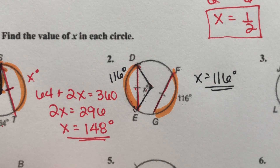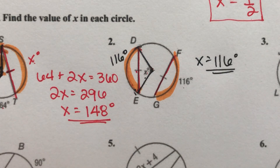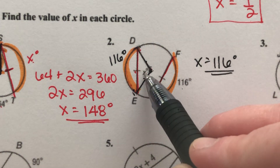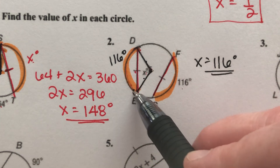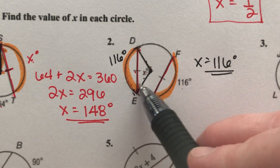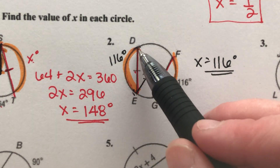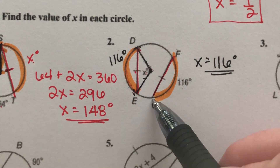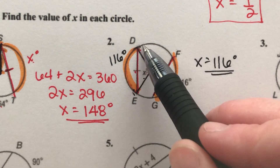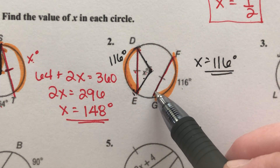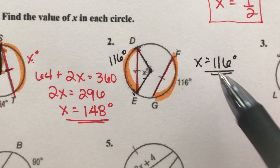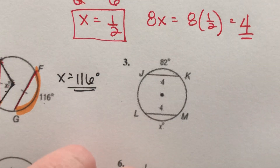Here's the central angle — this creates the big arc. If you ignore the chord for a second, the arc is the same measure as its central angle. So if this arc is 116, and the chords are the same, then the other arc is 116, and its central angle measure has to be 116. X equals 116 degrees.